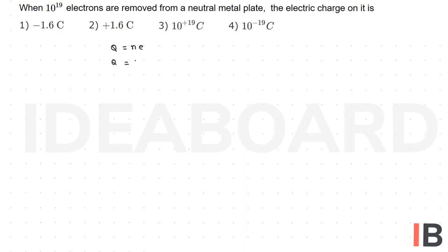They said 10 power 19 electrons, so instead of N we use 10 power 19. Charge Q is equal to 1.6 into 10 power minus 19, multiplied by 10 power 19. The powers cancel out, giving Q equal to 1.6 Coulomb, and this becomes positive. So the second option is the right answer.